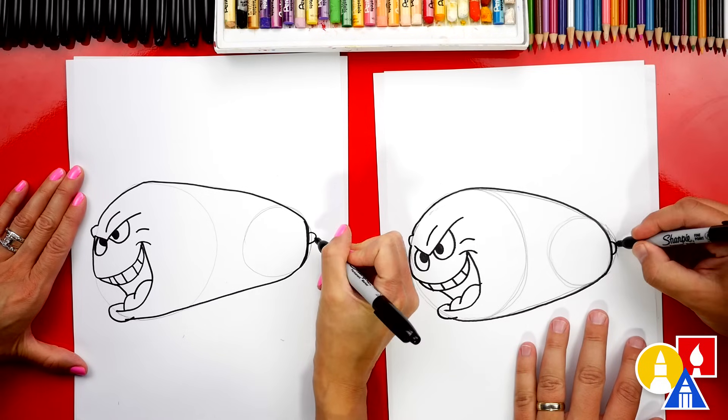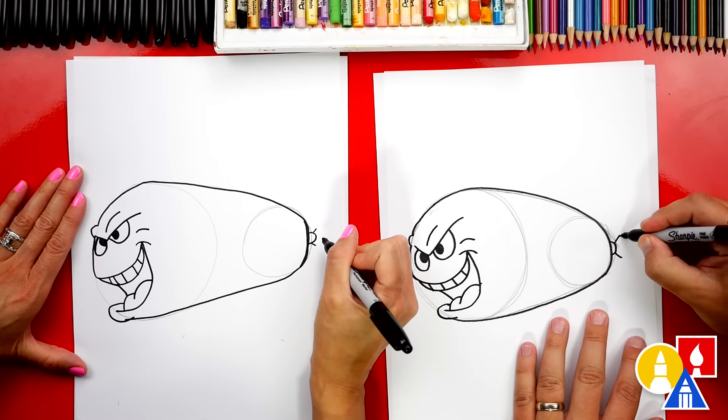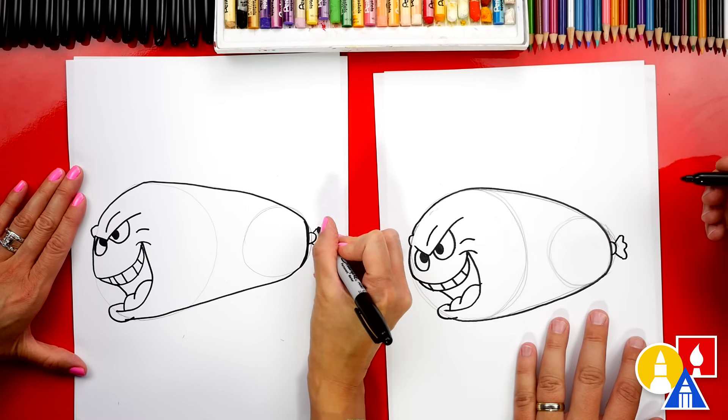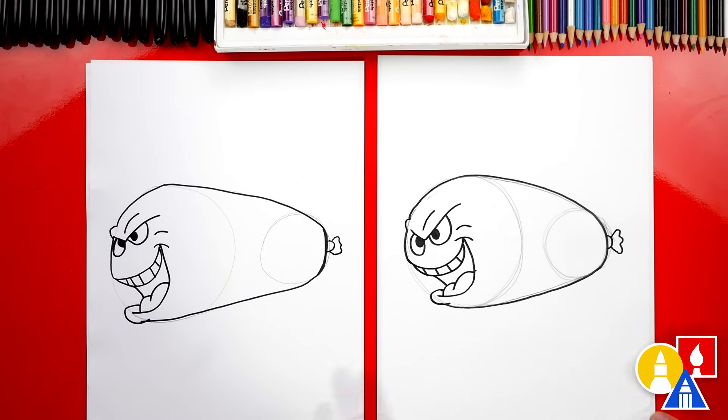And then we could draw the end of the water balloon coming out. Let's draw two diagonal lines, and then we could draw a wiggly line connecting them. We did it! We finished drawing our funny water balloon, our angry water balloon.